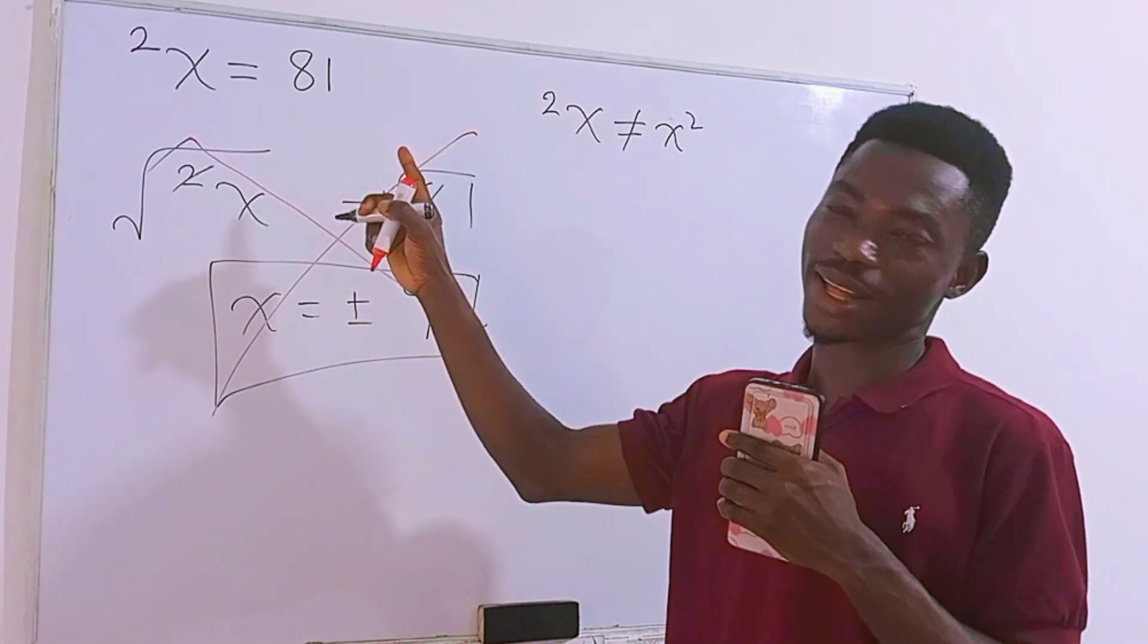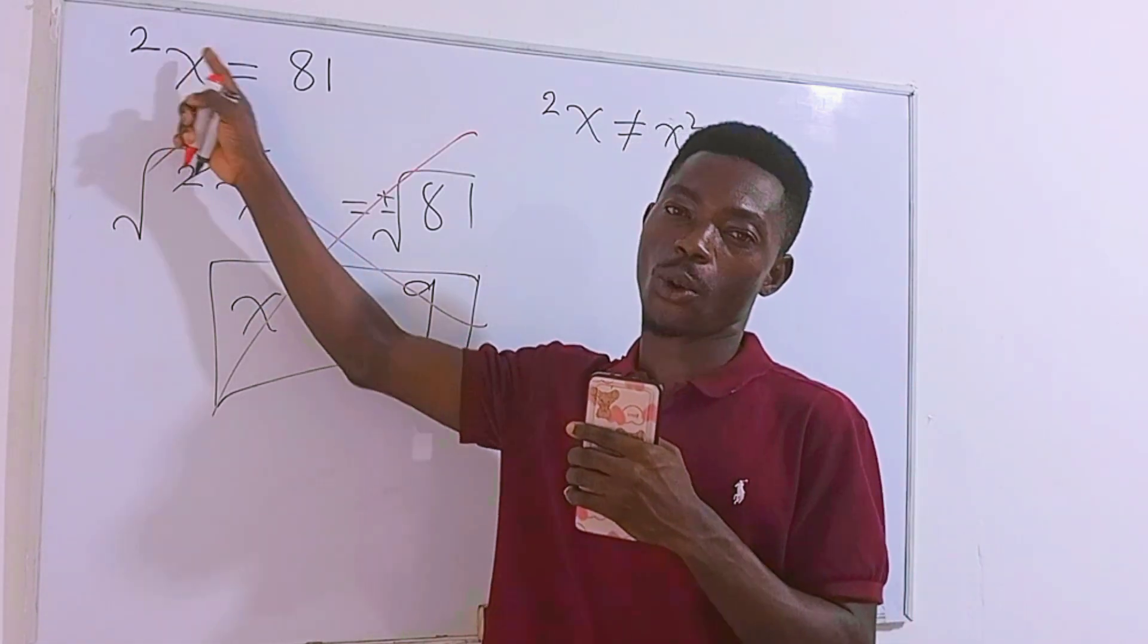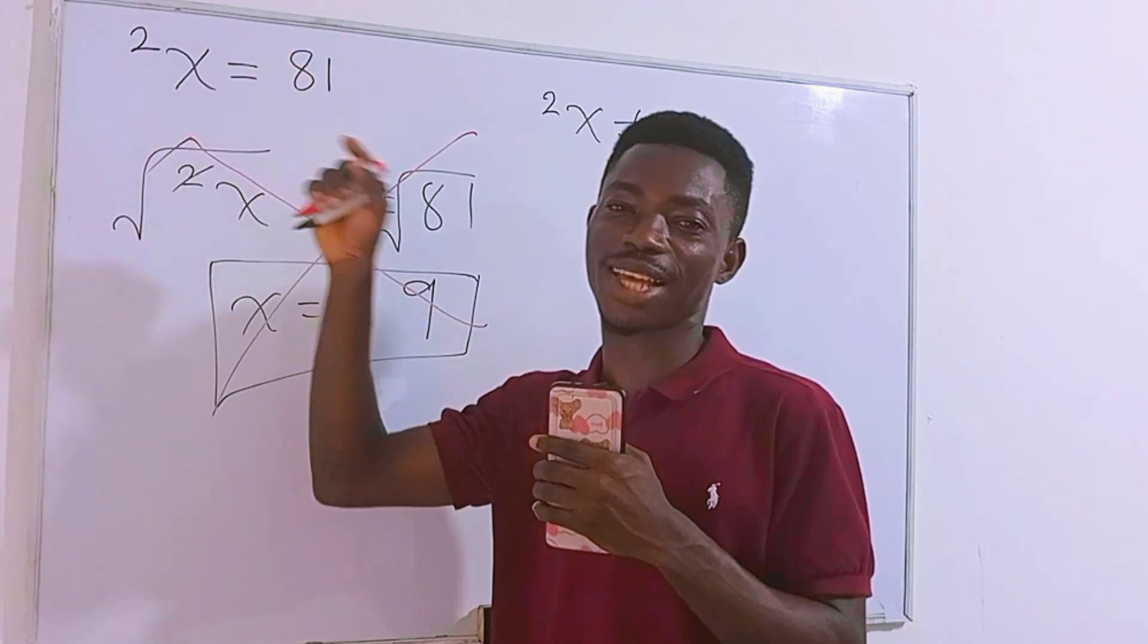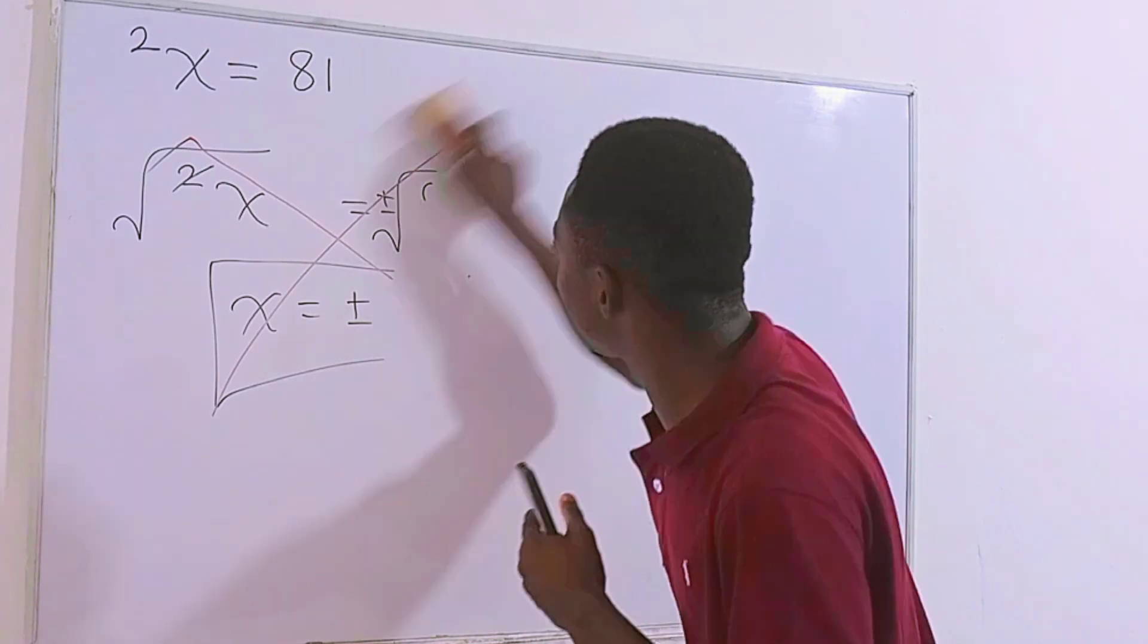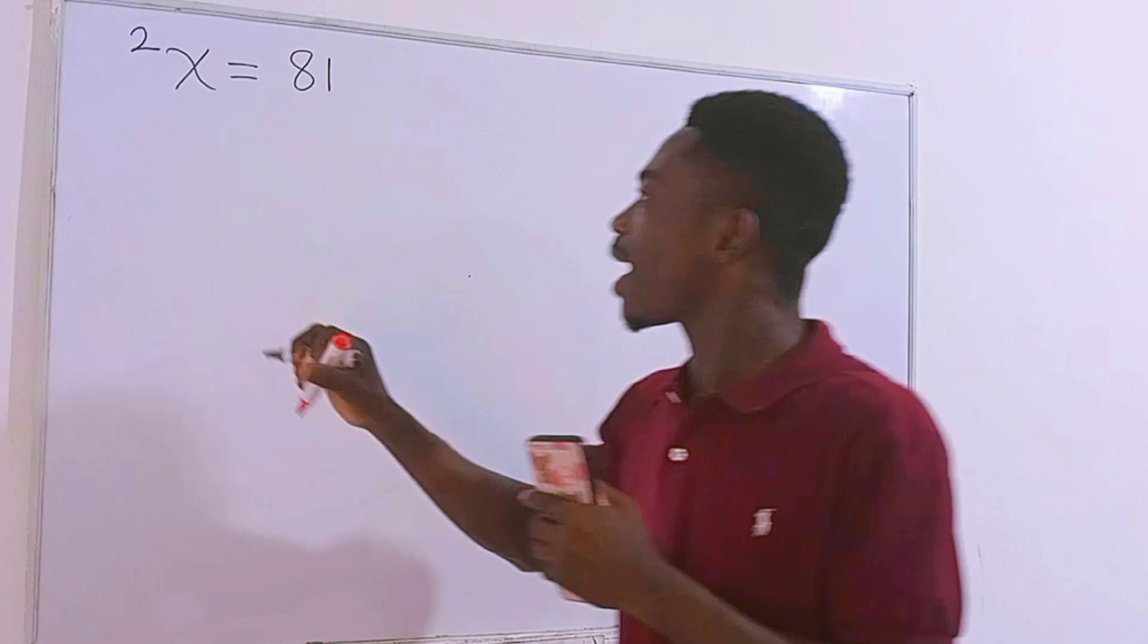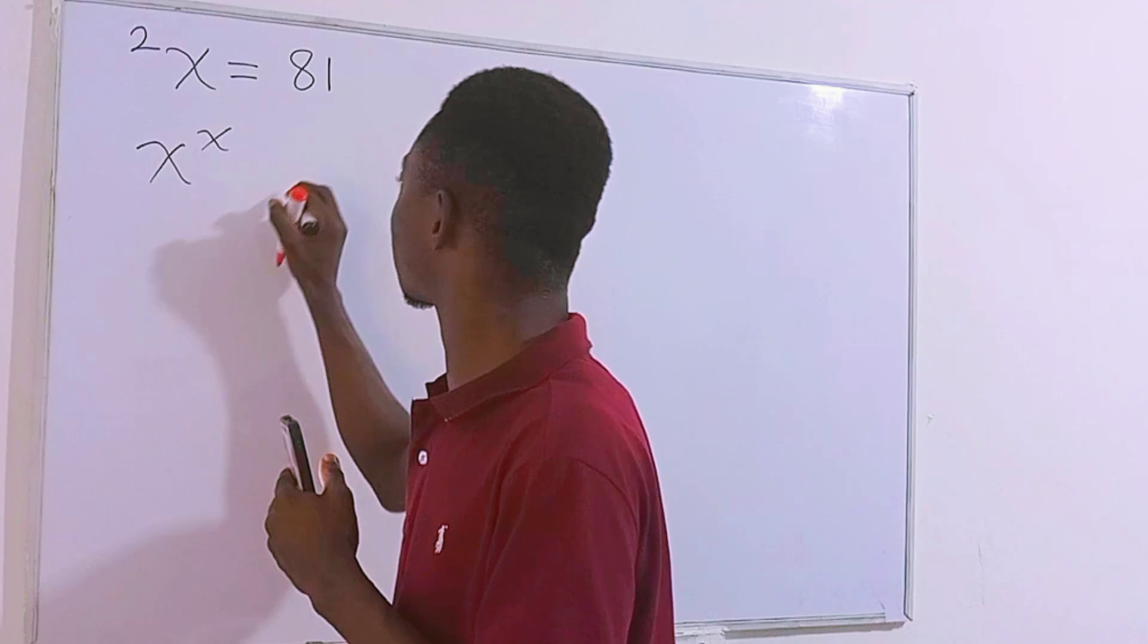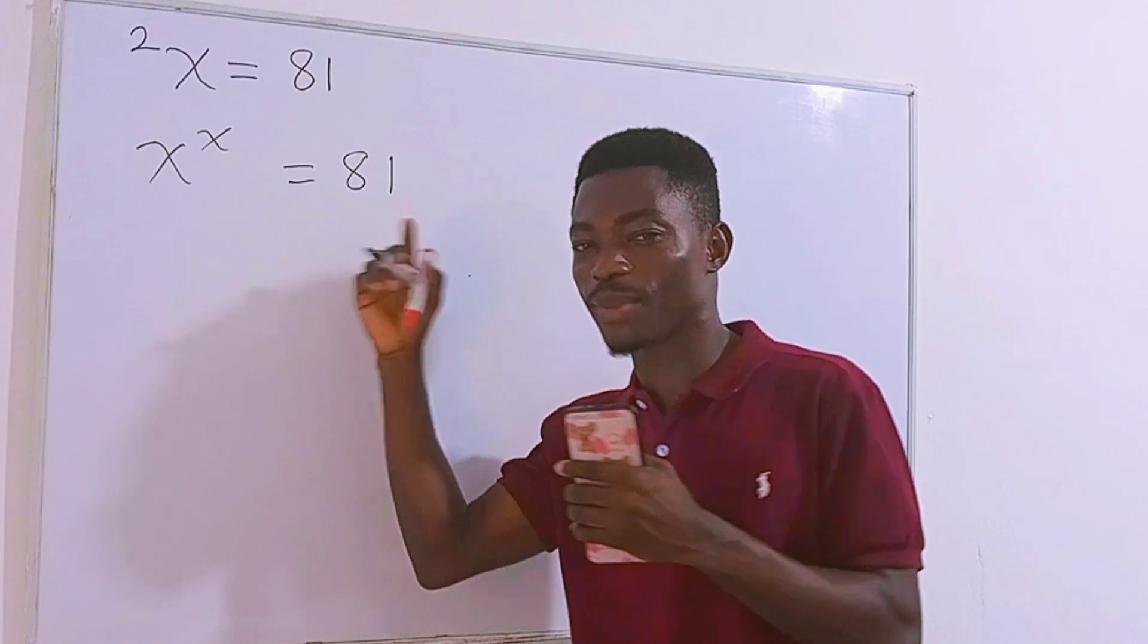This is a tetration question remember and this is how it is read. x raised to superpower 2. That is what it means and this is never x squared. So if you do it this way I'm sorry to say you are absolutely wrong. This question right here actually means that we have x raised to the power x and this is equal to 81.